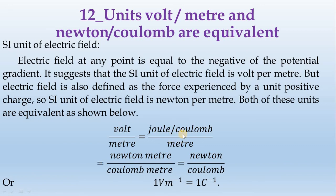Now, joule per meter equals Newton meter per meter. Joule is equal to Newton meter, so we get Newton per coulomb.